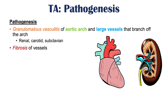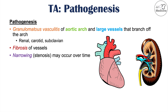What is noted is that there is fibrosis of the affected vessels — they become fibrotic, and there is a narrowing or stenosis over time. As granulomatous changes and fibrosis occur in those vessels, they become progressively narrower and stenotic. In some areas, an aneurysm can also form due to weakening of the vessel wall.